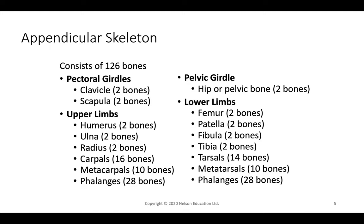The lower limb consists of the femur, which interacts with the kneecap or patella. The lower leg has the tibia — the major weight-bearing bone — and the fibula on the outside for balance. Then we have seven tarsals at the ankle, metatarsals forming the bridge of the foot, and phalanges for the toes. Note that phalanges refers to digits for both fingers and toes.